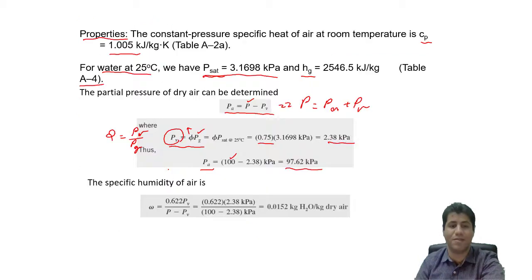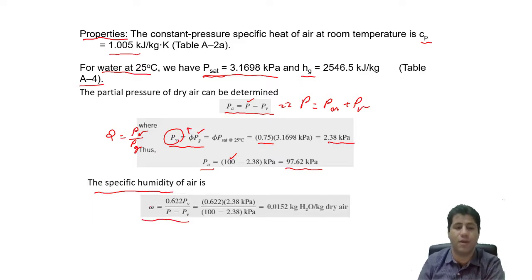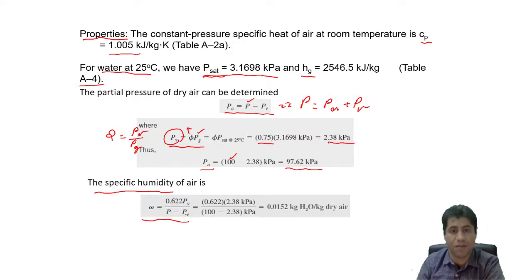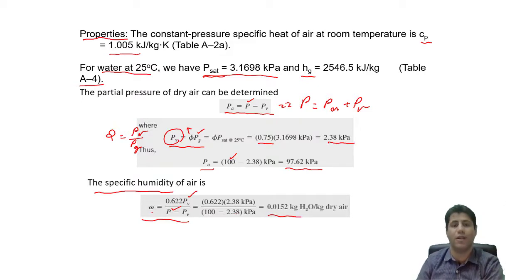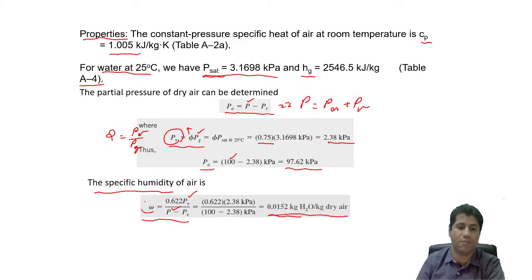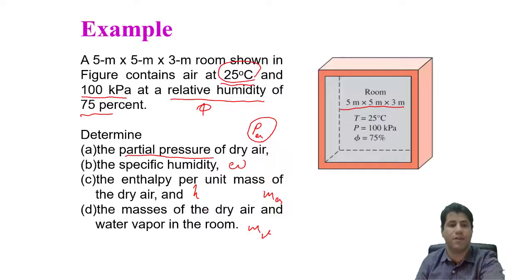Part B: Determine the specific humidity Ω. Using the equation Ω = 0.622·PV/(P − PV), we substitute PV = 2.38 kPa and P = 100 kPa. This gives Ω = 0.0102 kg H₂O per kg dry air.